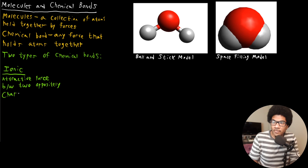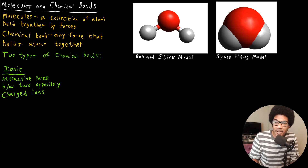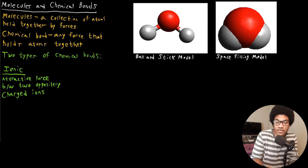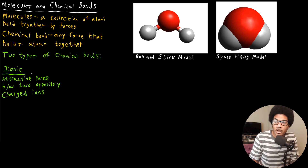Since they're charged, they're two oppositely charged ions. A cation and an anion come together to form this electrostatic interaction. An atom with a positive charge and one with a negative charge come together to form this electrostatic interaction and form an ionic bond.